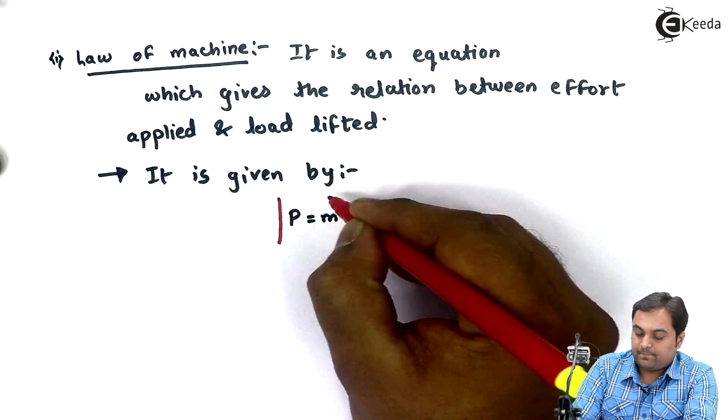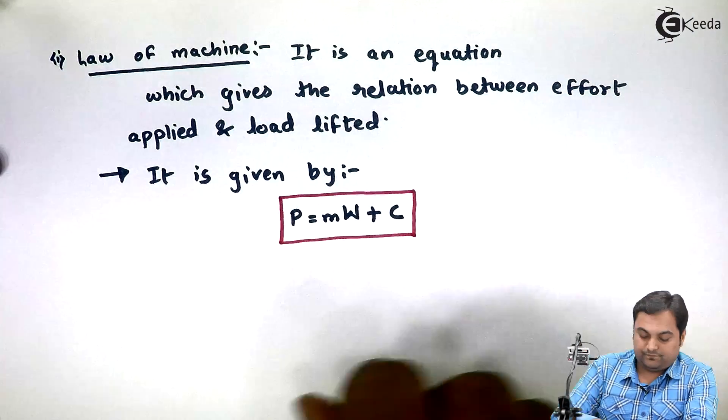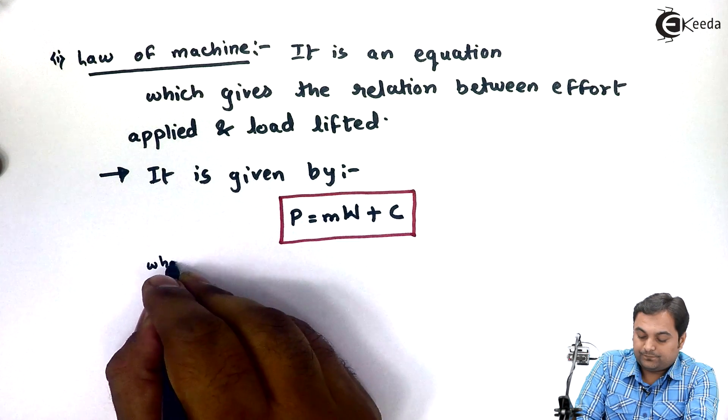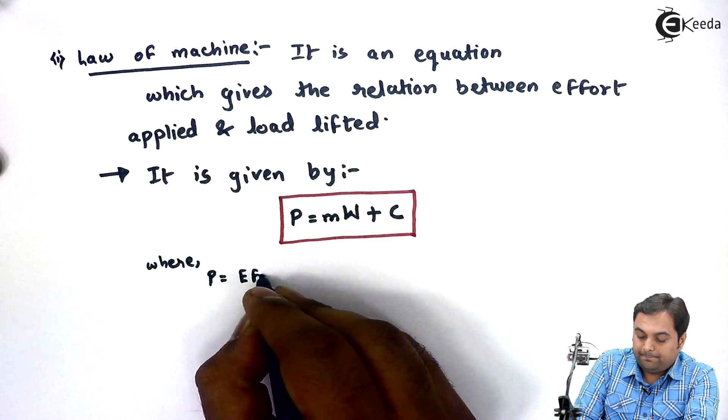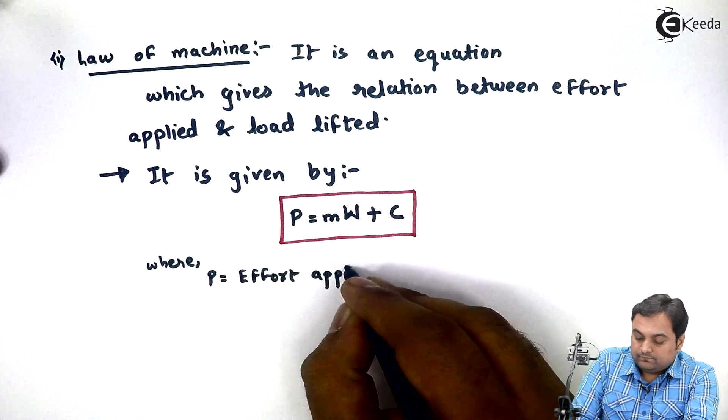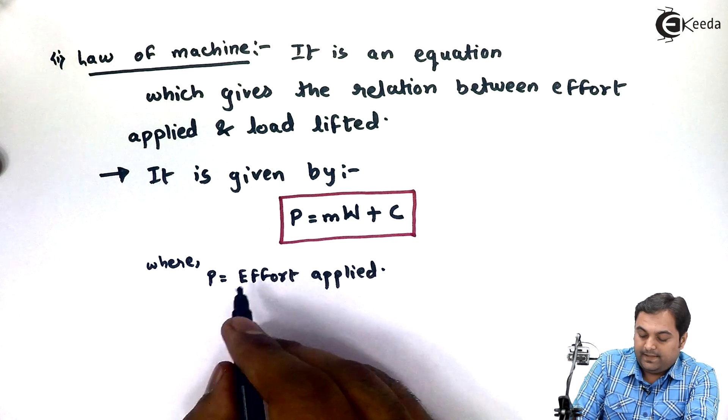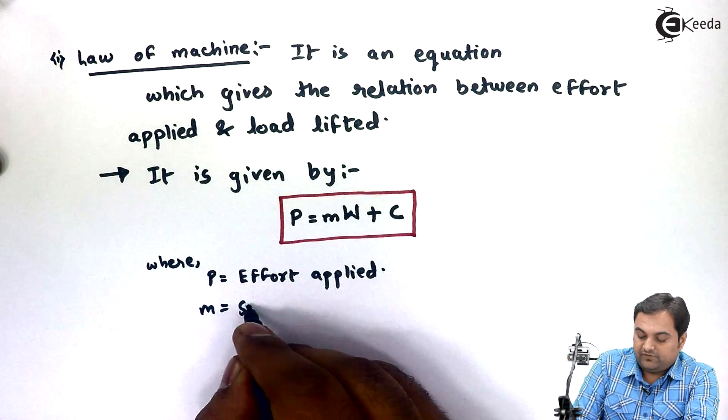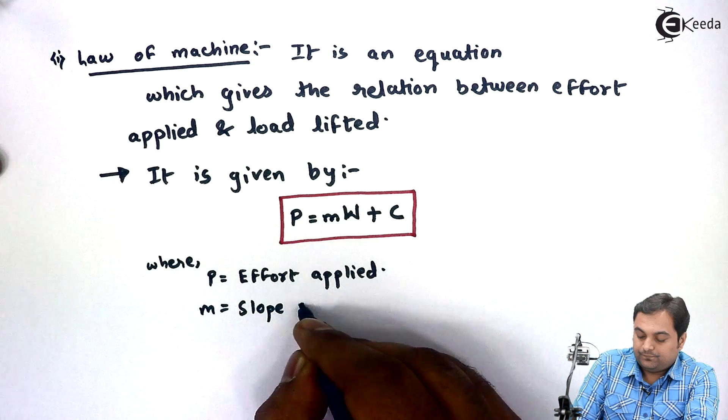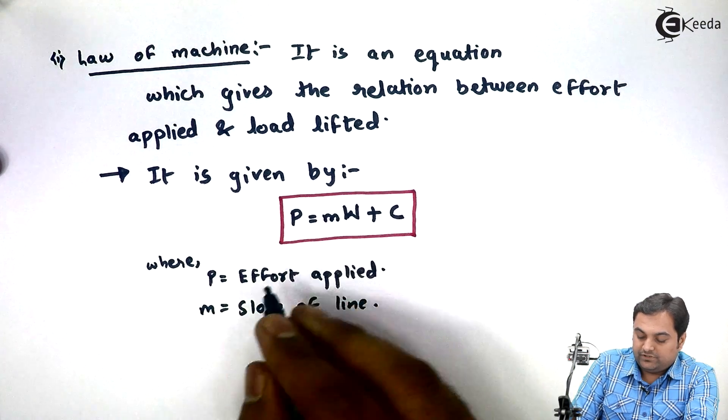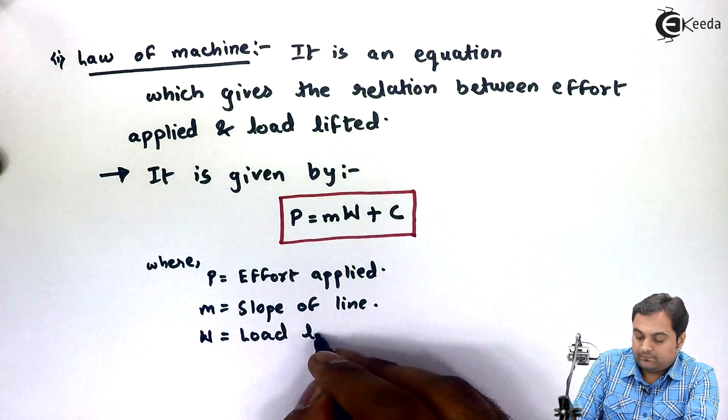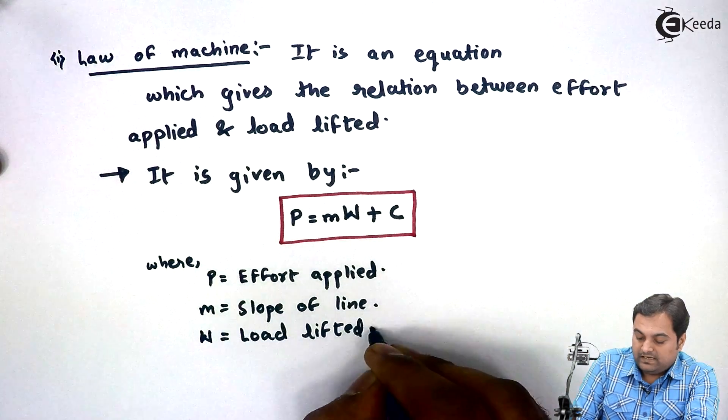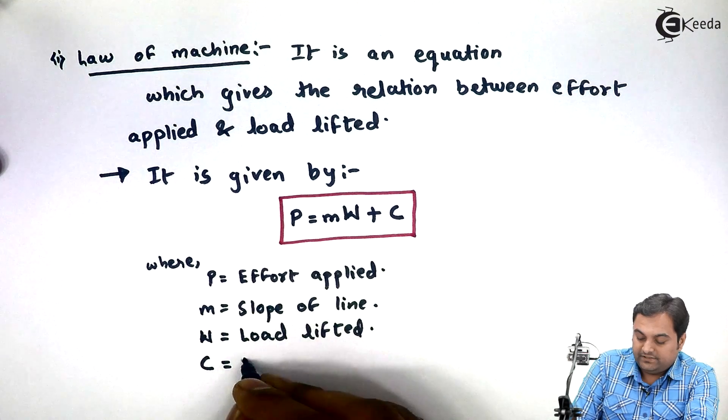Where P is equal to effort applied, M is the slope of line, W is the load which is lifted, and C is called as Y intercept.